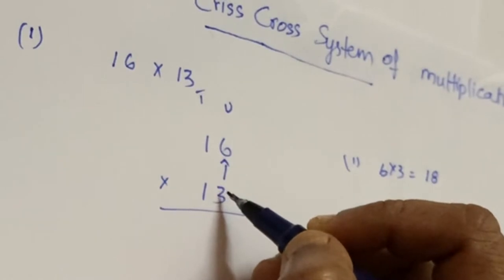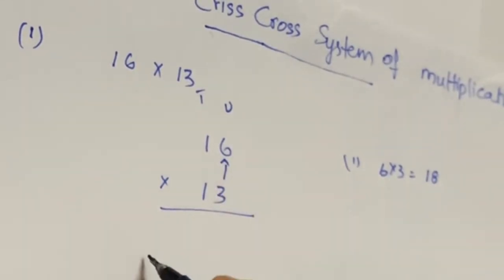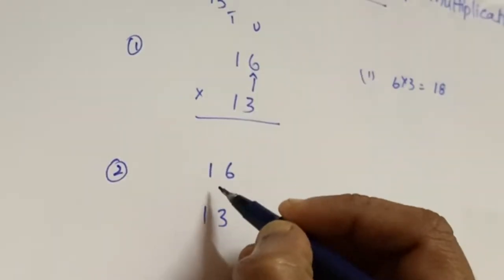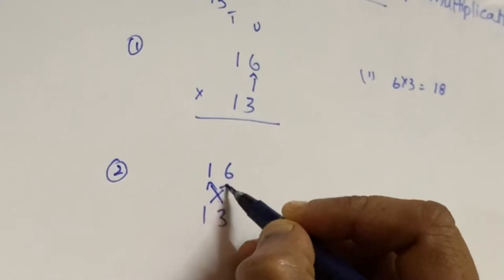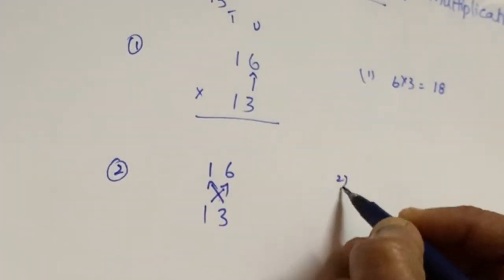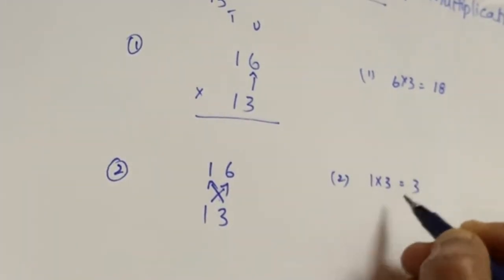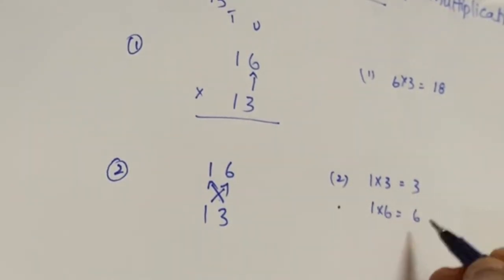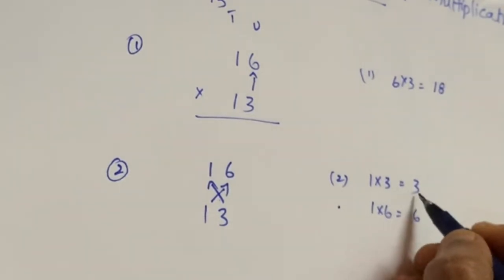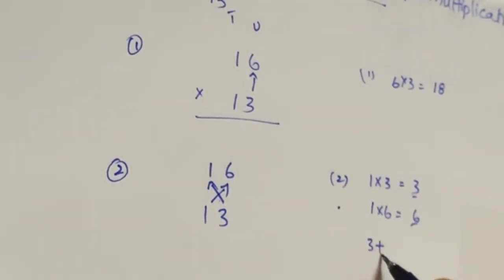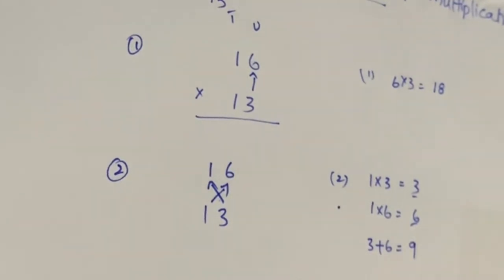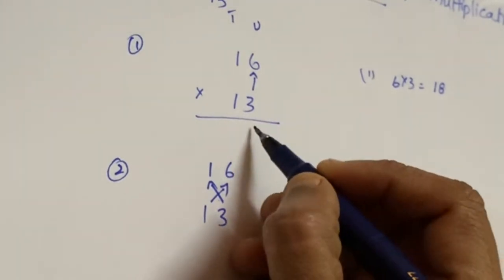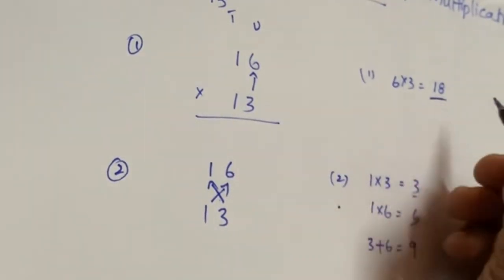The second step is to cross-multiply the tens place with the units place of the other number. For 16 and 13: 1 into 3 equals 3, and 1 into 6 equals 6. Then add these two products: 3 plus 6 equals 9.